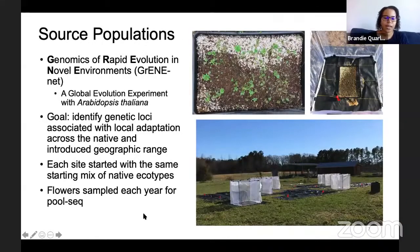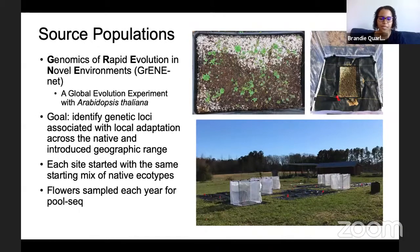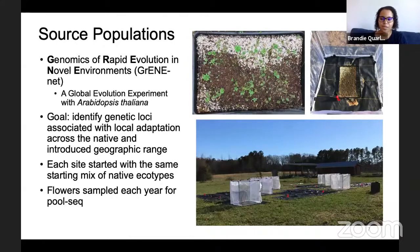For my source populations, I'm using a global evolution experiment the lab is part of called Genomics of Rapid Evolution in Novel Environments, or GreenNet. The goal of the global experiment is to identify genetic loci associated with local adaptation across the native and introduced geographic range of this plant. Each site started with the same starting mix of native ecotypes — about 231 ecotypes — so a good starting mix of genetic variation. Every site samples flowers each year for pool sequencing, so we can follow changes in allele frequencies.